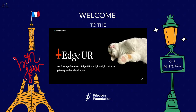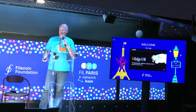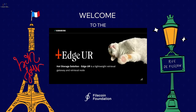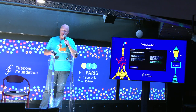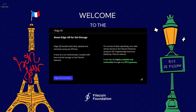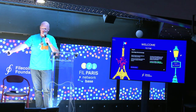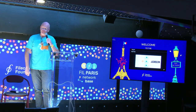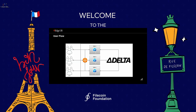Delta is the deal-making engine. Customers that want hot storage use a microservice and product called EdgeUR — the lightweight retrieval gateway and retrieval node. It handles data uploads and retrievals using one key, acts as a hot retrieval layer, and is highly available through any IPFS gateway. It speaks both the GraphSync back-end Filecoin protocol as well as the IPFS protocol for fast retrieval. Users interact with EdgeUR through HTTP — download your NFTs, cat photos, whatever — all through EdgeUR, and it's all backed by Delta so all deal-making happens transparently in the back.